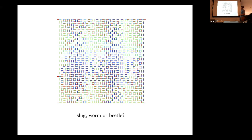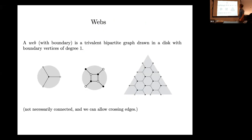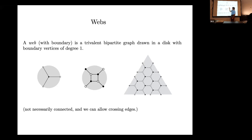The main object is a web. A web is just a trivalent bipartite graph — bipartite means the vertices are black and white and edges only go from black to white. Trivalent means degree three, except it's going to have some boundary vertices. It's going to be a planar graph, so I'll put the boundary vertices on the outer boundary of a disk. It doesn't have to be connected, and the edges can cross — you'll see later how to convert a non-planar web to a planar web.